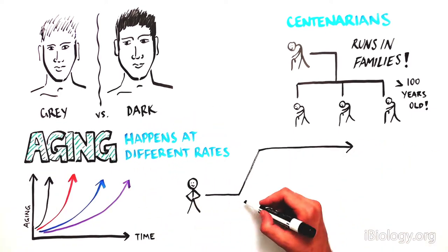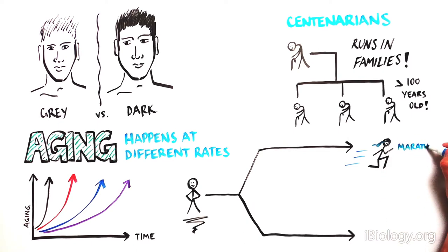Some of us will grow up to be active 90-year-olds running marathons, and others will have degenerative diseases in our 50s.